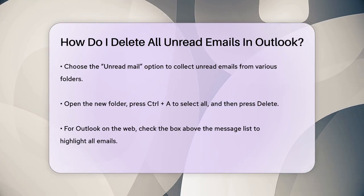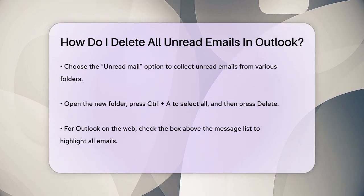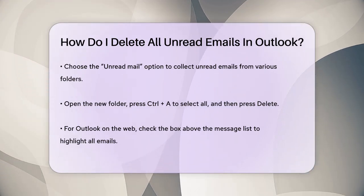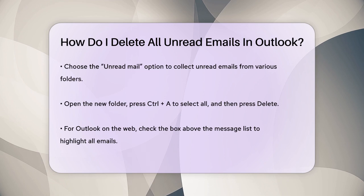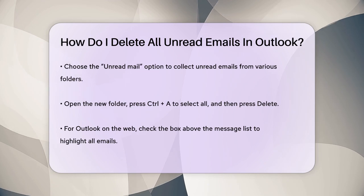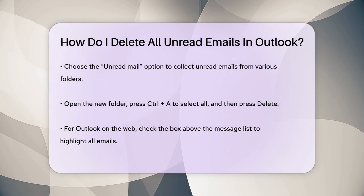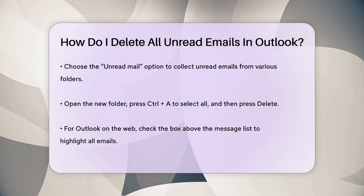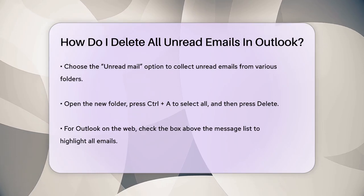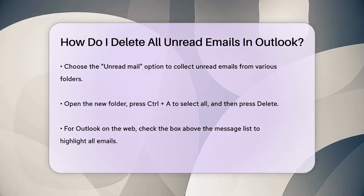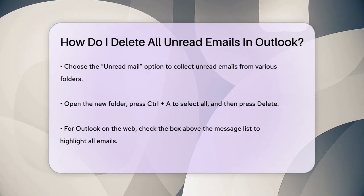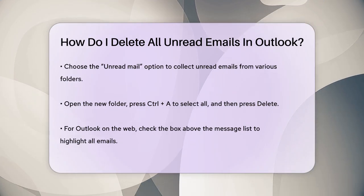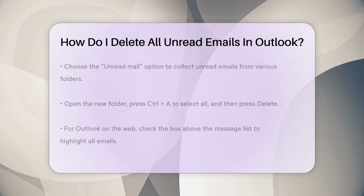If you prefer using Outlook on the web, you can select the checkbox above the message list to highlight all messages on the page, then select Select Everything, and click on Delete. This will move all the emails to the deleted items folder, where you can permanently delete them by right-clicking the folder and selecting Delete All.